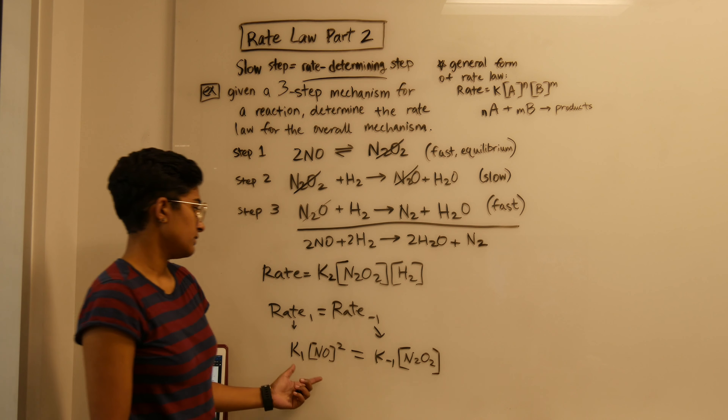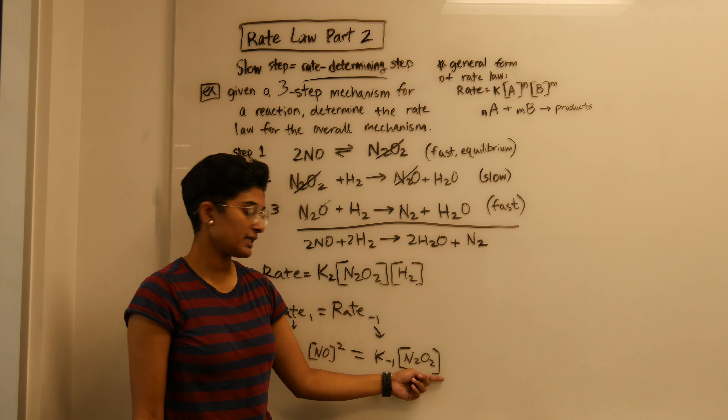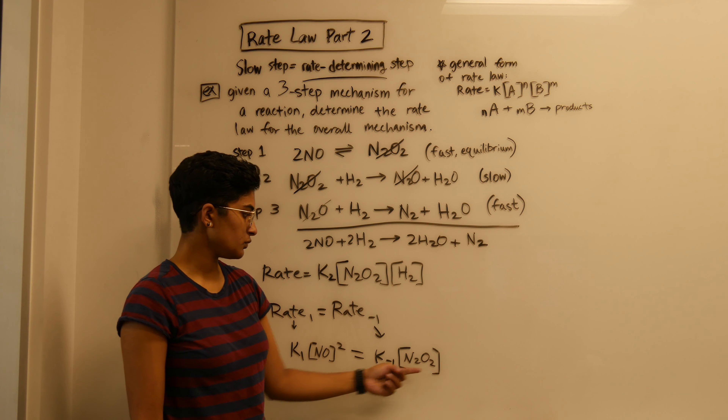This equation is going to help us get rid of the intermediate. If we isolate N2O2, we can plug the rest of this into the rate law and be left with only the reactants from our overall mechanism — which is important because we can only use those reactants in our overall rate law.